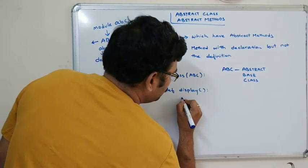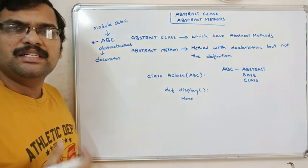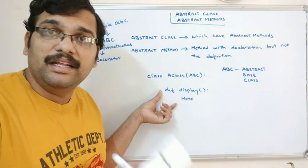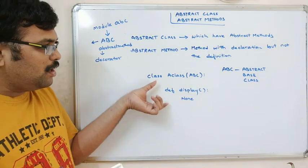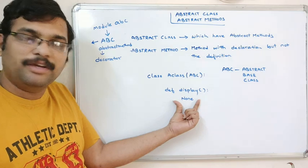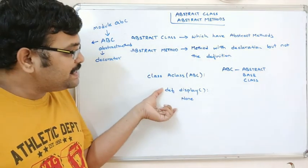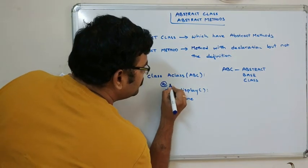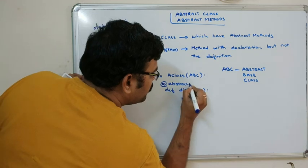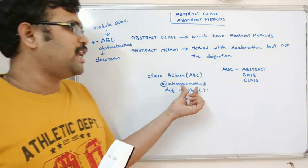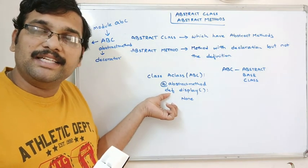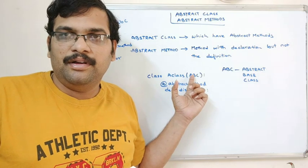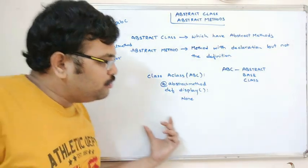We can write a method like 'define display' with 'None' as the body, meaning there is no implementation. However, this is not an abstract method until you add the decorator. In order to make the method an abstract method, we must use the '@abstractmethod' decorator above the method definition.